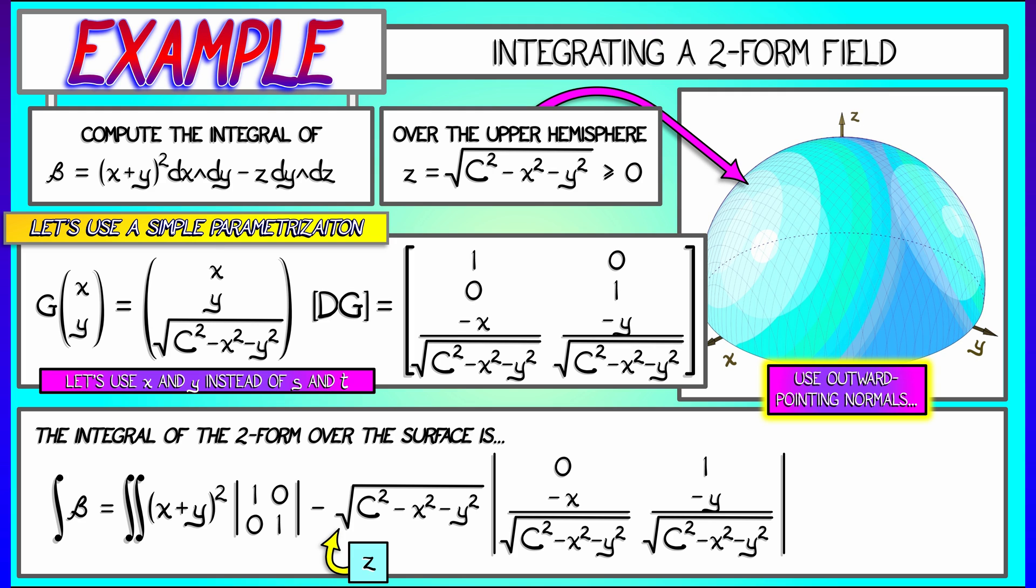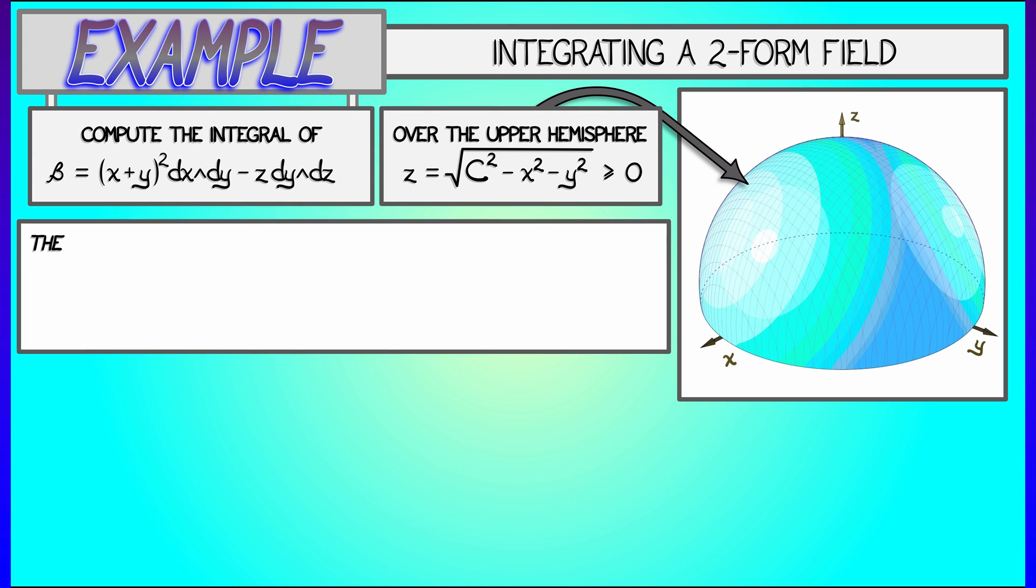Now, all of this gets integrated with respect to the area form in the xy-plane, and this all kind of looks ugly. But if you do those determinants, there's a lot of simplification that goes on. In particular, that second determinant makes everything really nice, and what we get for the integral of beta is the double integral over the disk of radius c in the xy-plane of quantity x plus y squared for that first term, plus x for that second term, all with respect to area.